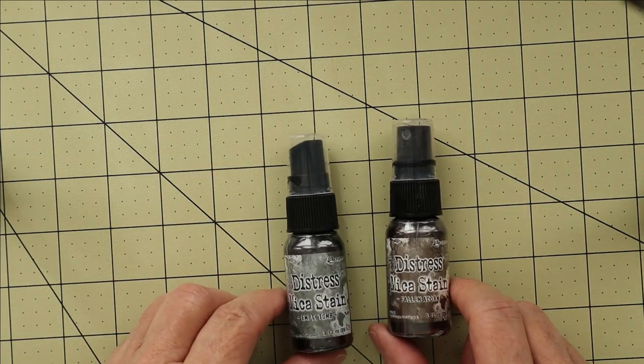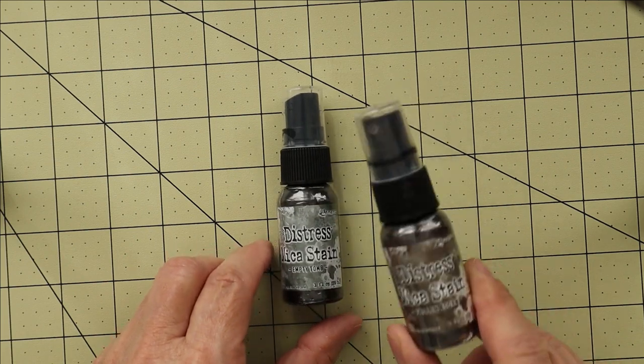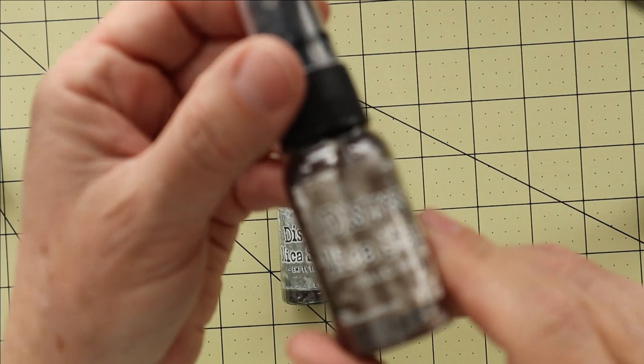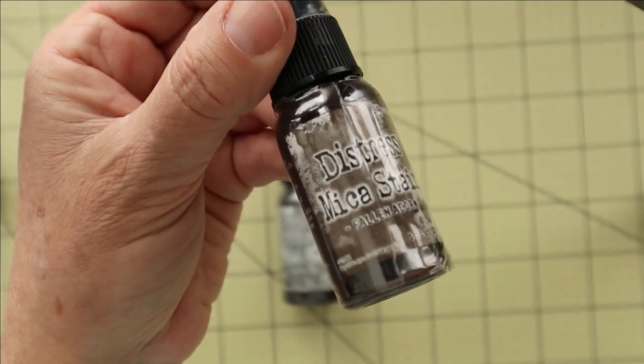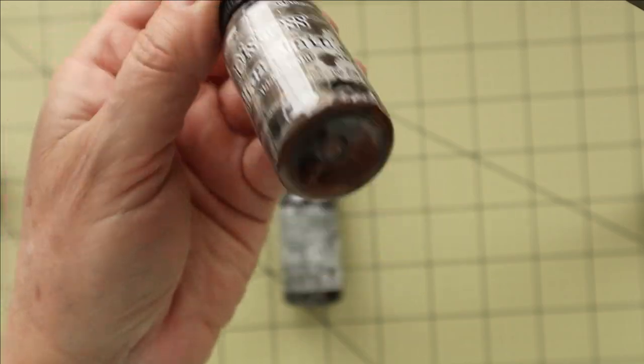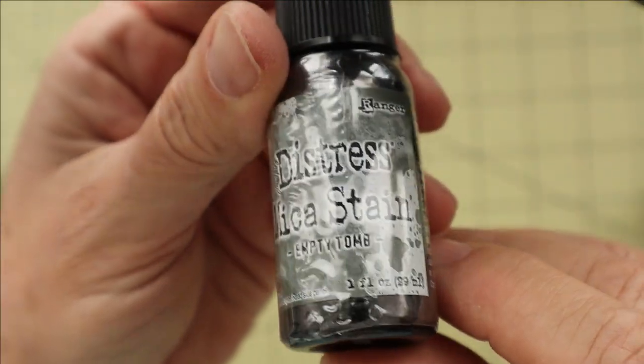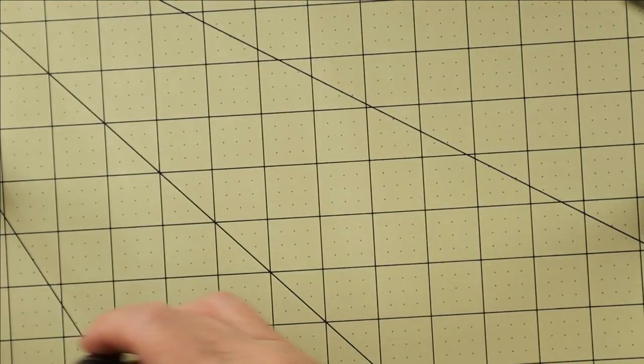Today we're going to use a couple colors of distress mica stain by Ranger and Tim Holtz. This one is Fallen Acorn, and this one is Empty Tomb. These particular colors came from the new line of Tim Holtz distress mica stains for Halloween. From what I understand, there's some new ones coming out for Christmas, so I'm probably going to buy those too.